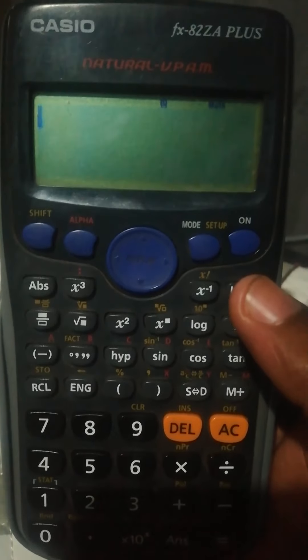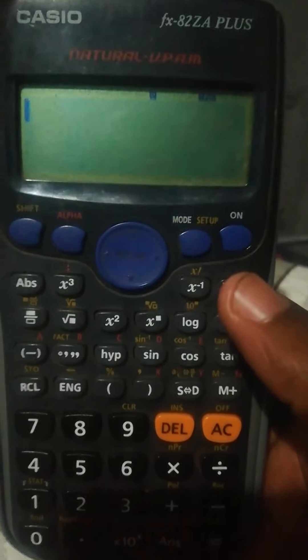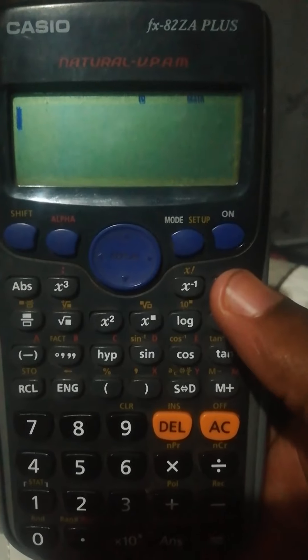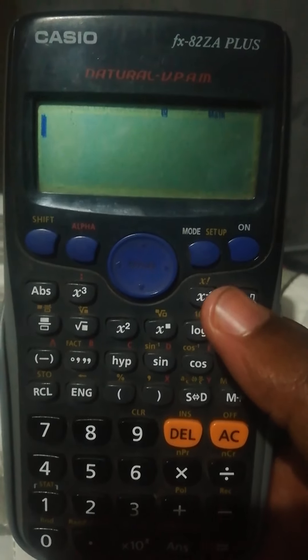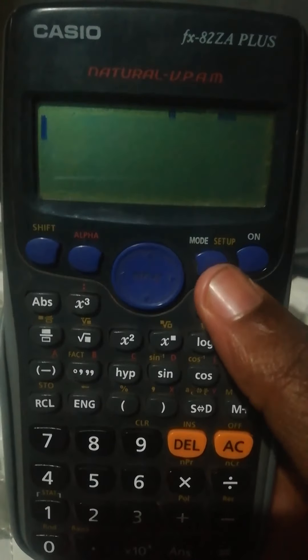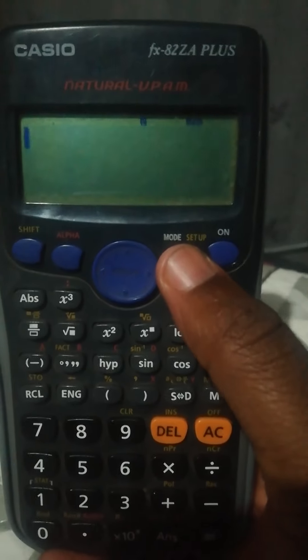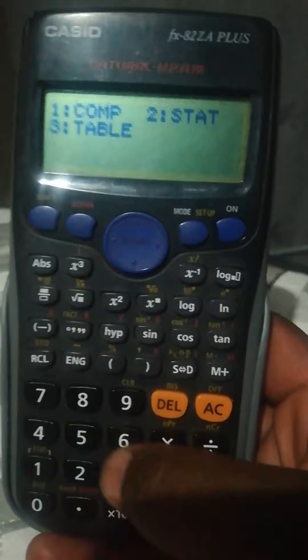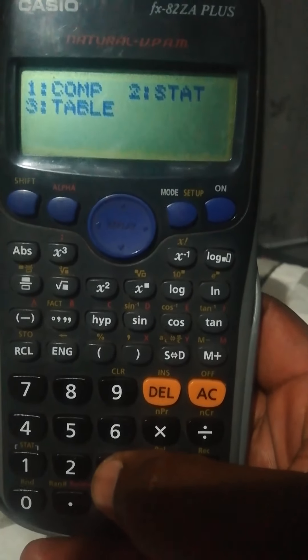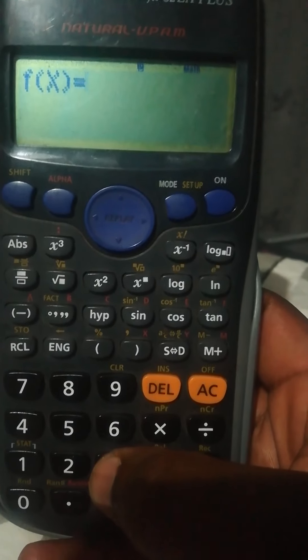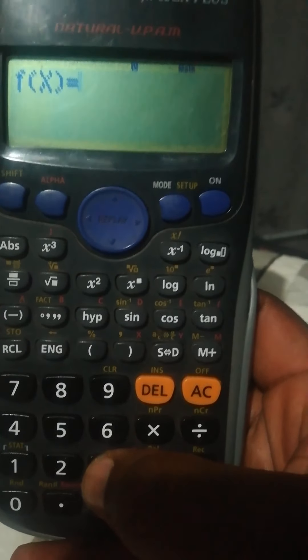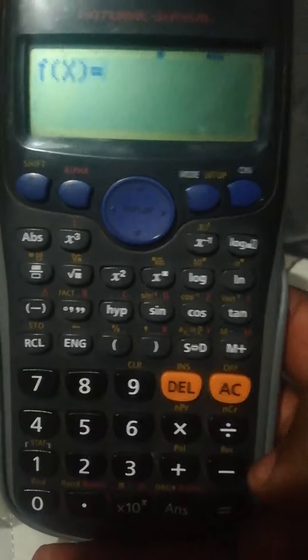Ok hello, so if you want to plot a graph on your calculator, you press mode setup and then you select option 3, table. And then after that you type in your formula, your function.